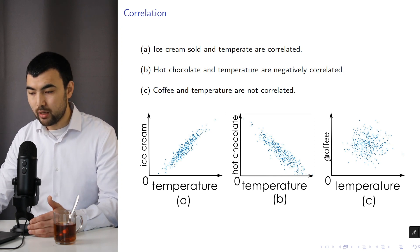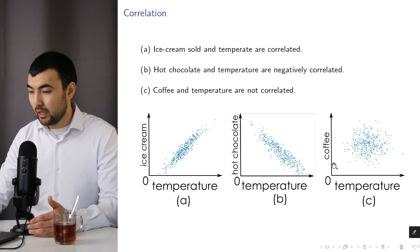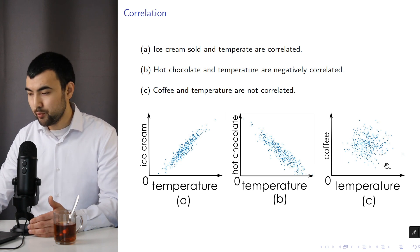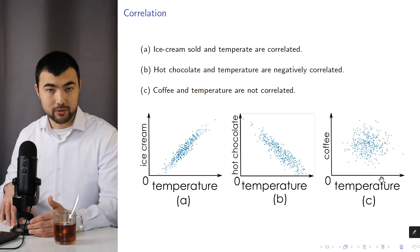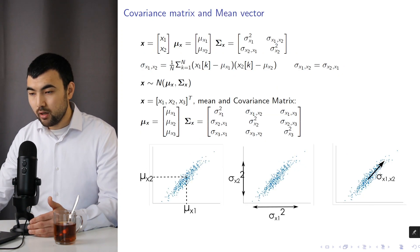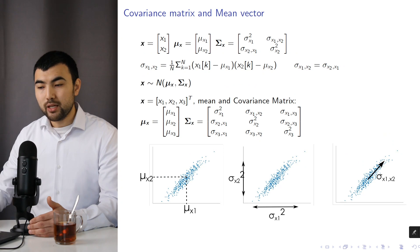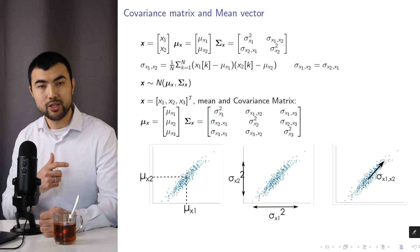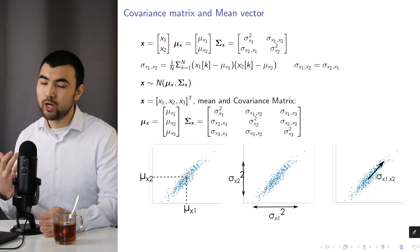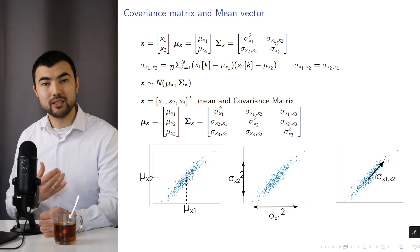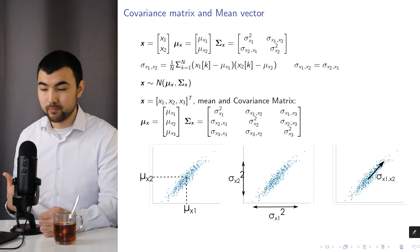And finally, we have temperature and the quantity of coffee. In that case, we don't have any correlation, and that's why we end up with this scattered distribution of the random variables.